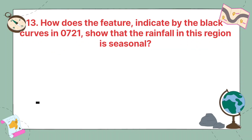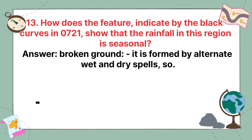How does the feature indicated by the black house in grid square 0721 show that the rainfall in this region is seasonal? The answer is broken ground — it is formed by alternate wet and dry spells.